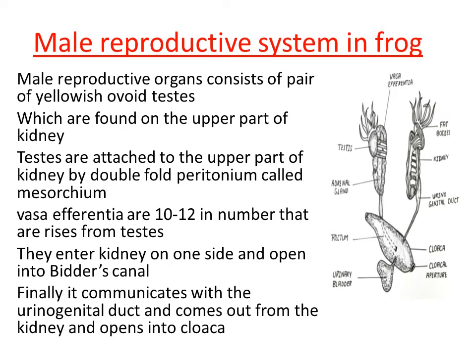Through the common opening, waste material as well as sperm ejects out from the body. This completes the reproductive system in the male frog.